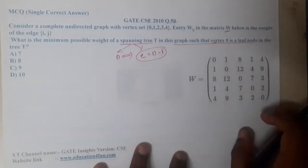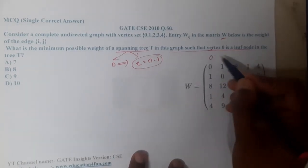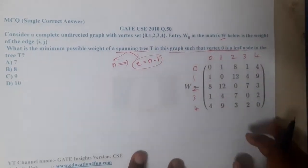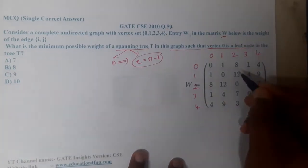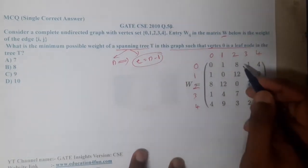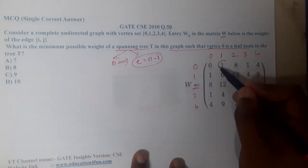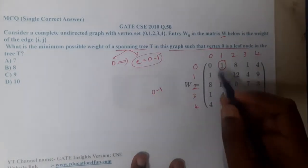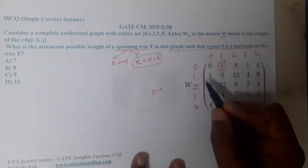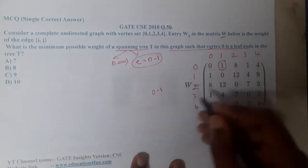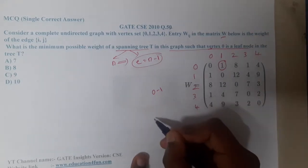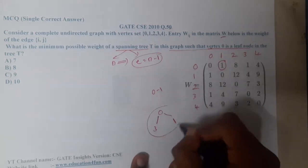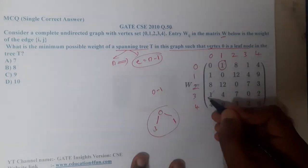Let us first write down the matrix for vertices 0 through 4. We round up the minimum values in the table, excluding self-loops since they always have minimum value. The first minimum value is between 0 and 1. The next minimum is between 0 and 3, but we should not select that yet, because doing so would make 0 an internal node rather than a leaf.